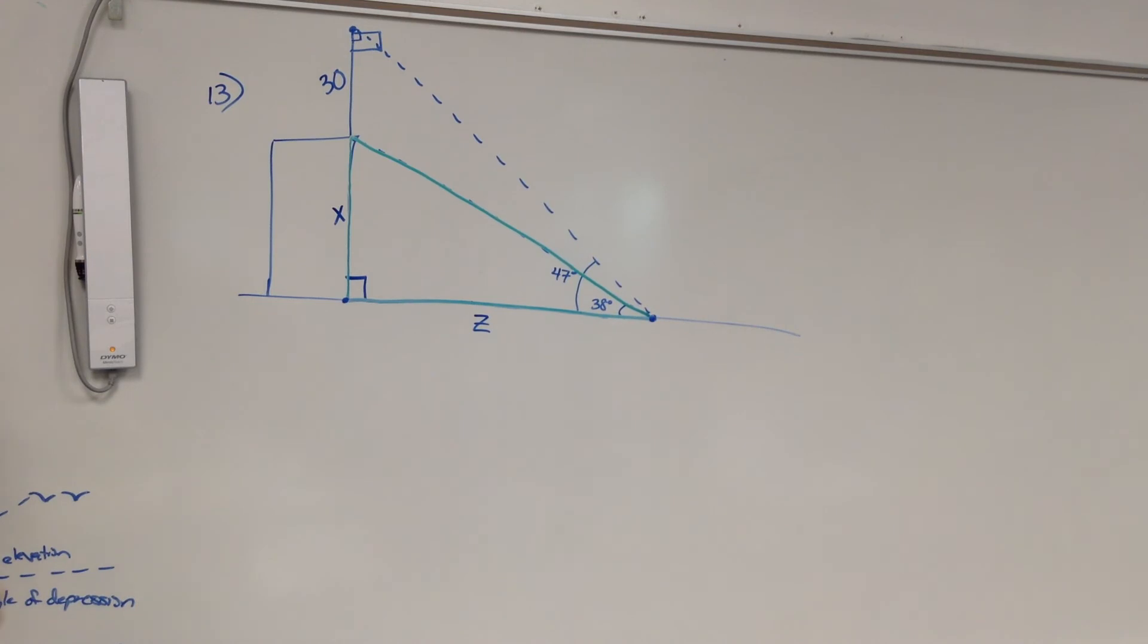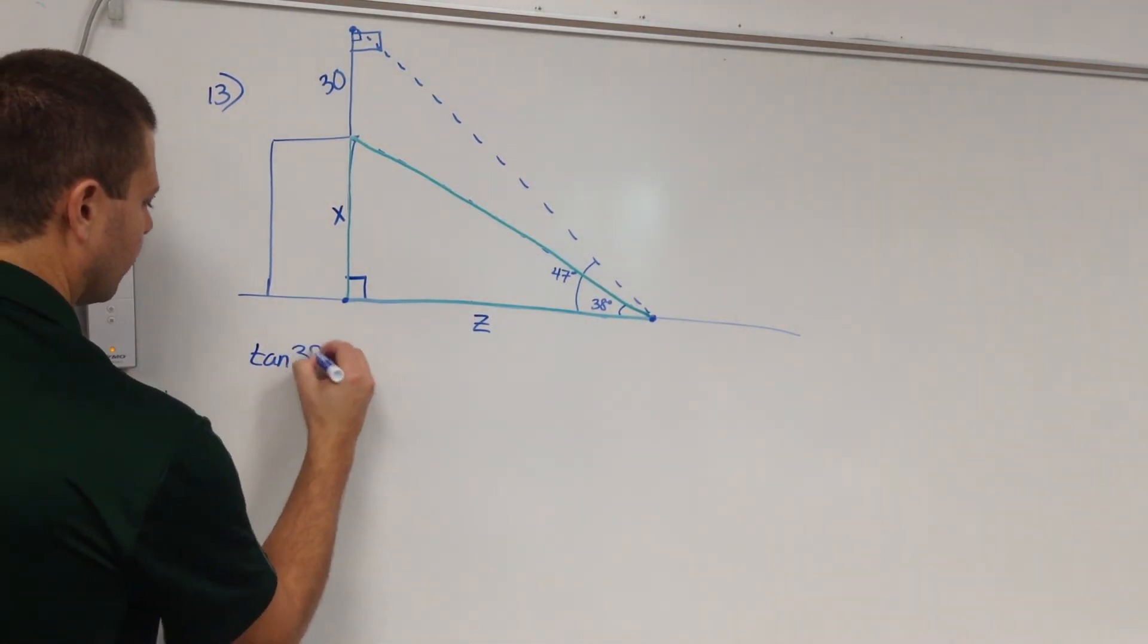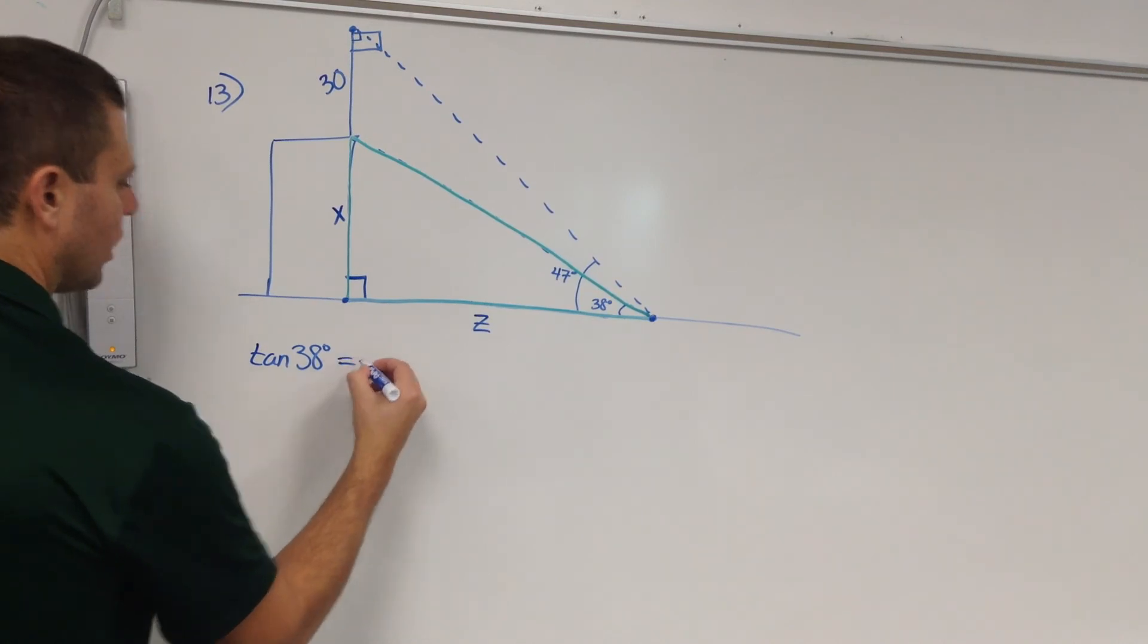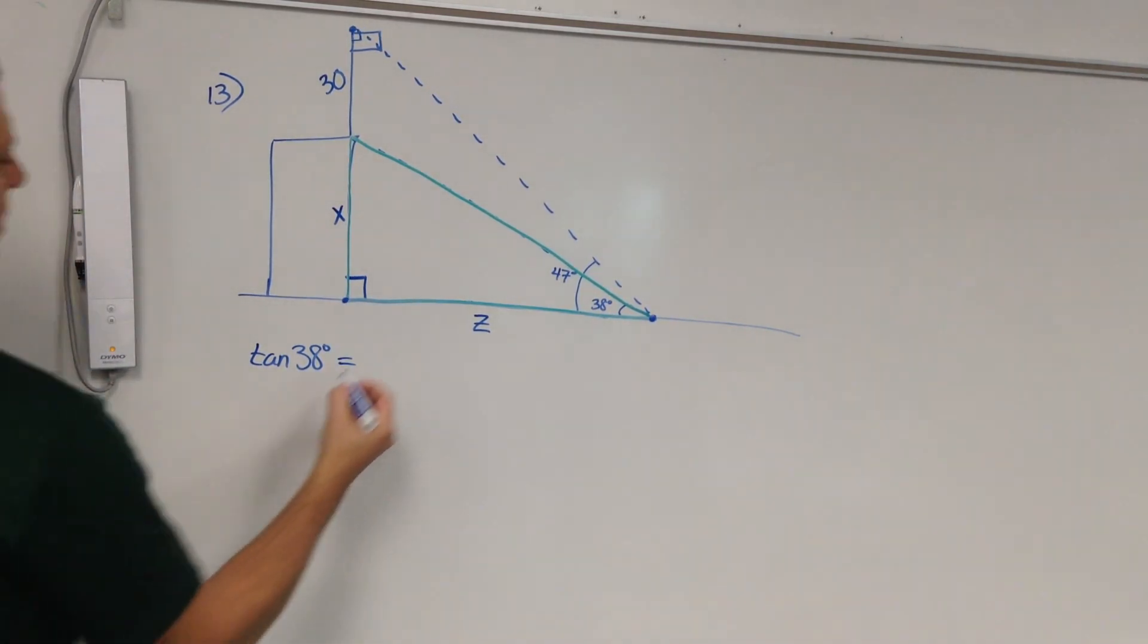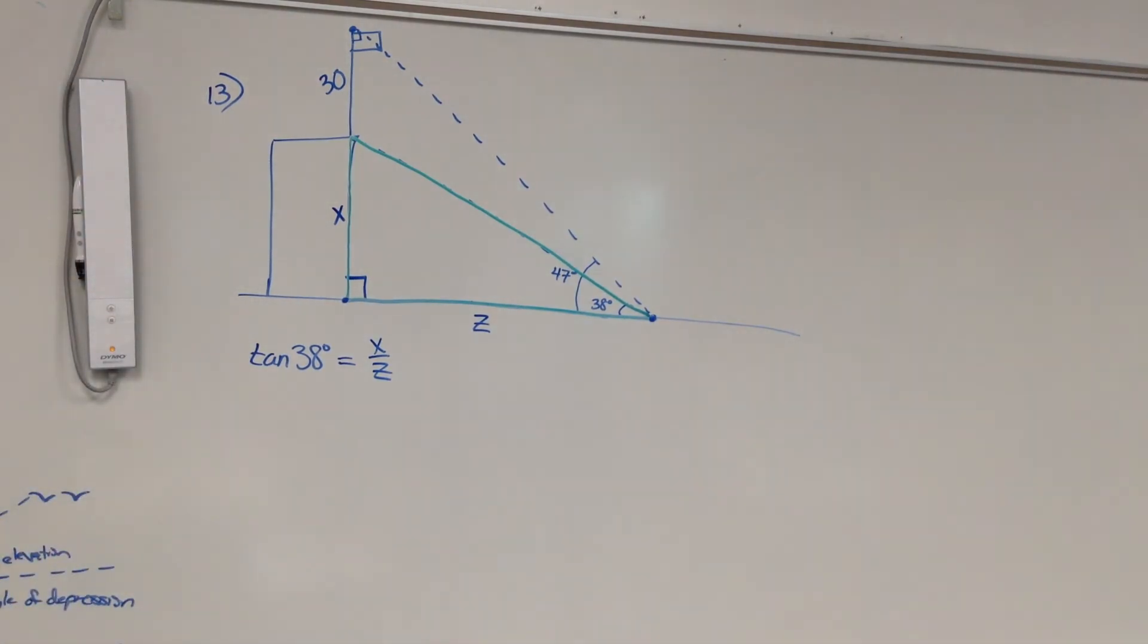Now, using the small triangle, can I write an equation that's going to have both X and Z in it? Yeah. What trig function? Tangent. So I could write tangent of how many degrees? 38. Tangent of 38 degrees for me. Remember, your angles are different. Tangent of 38 would equal what over what? X over Z. X over Z. Tangent of 38 equals X over Z.